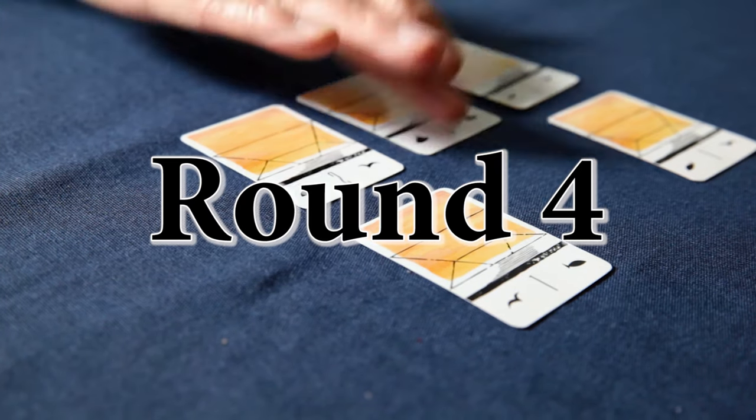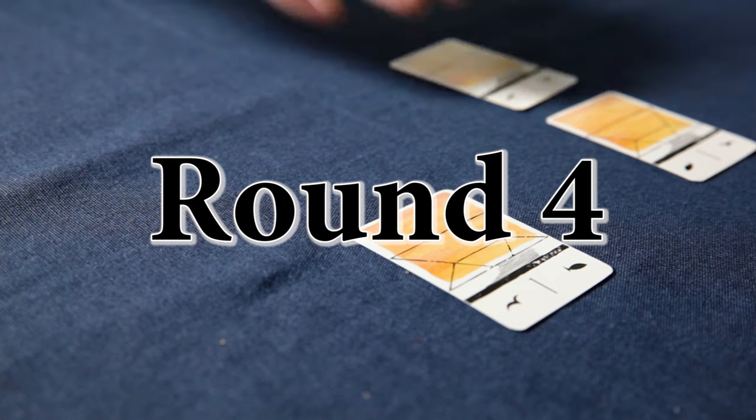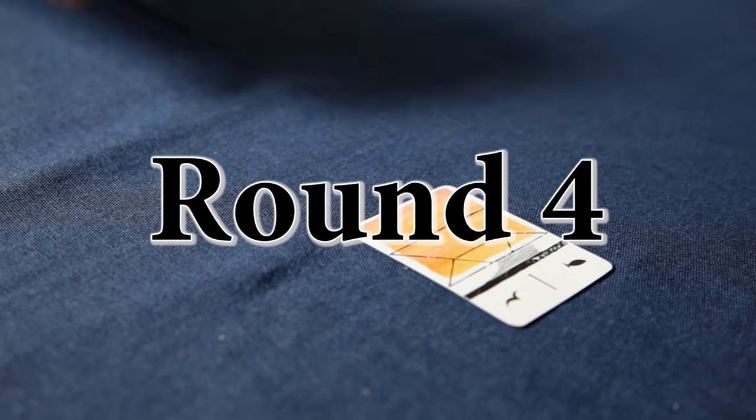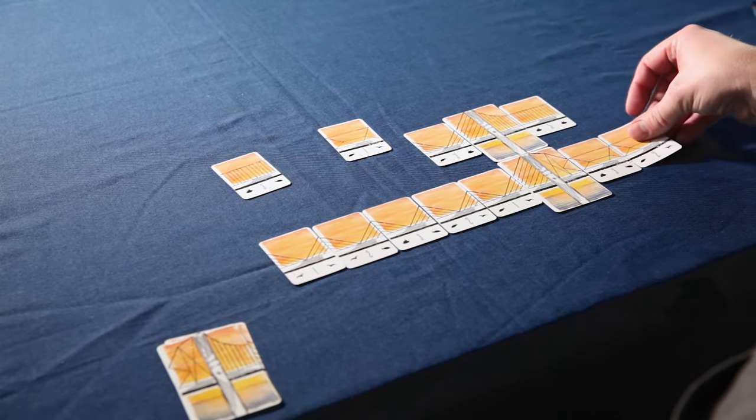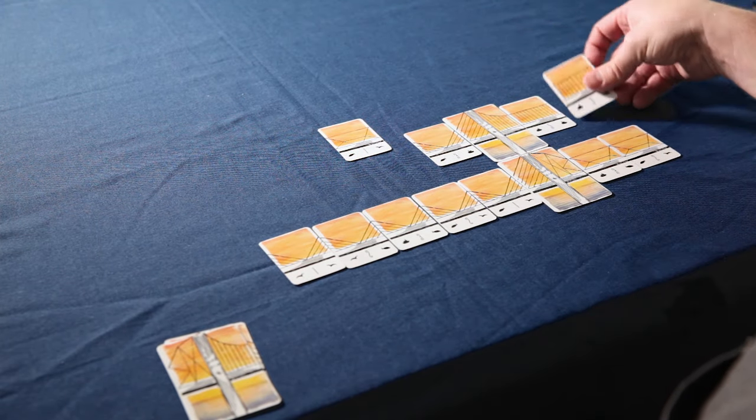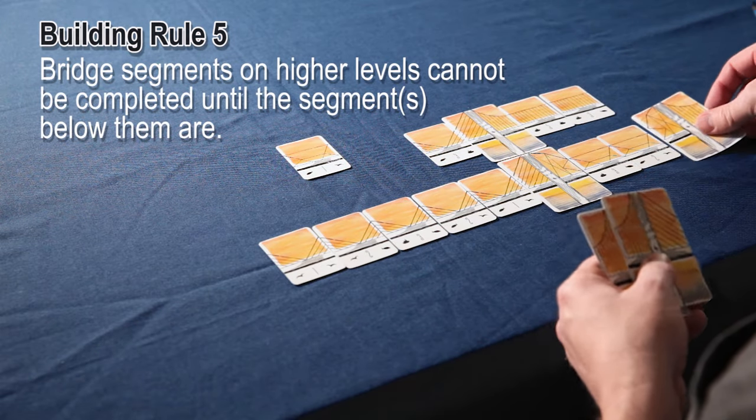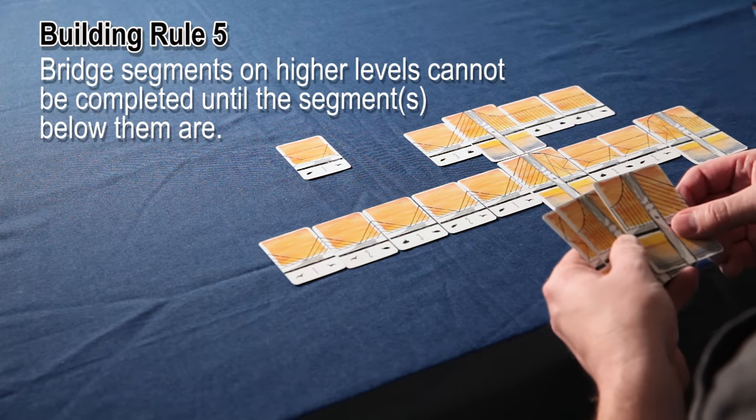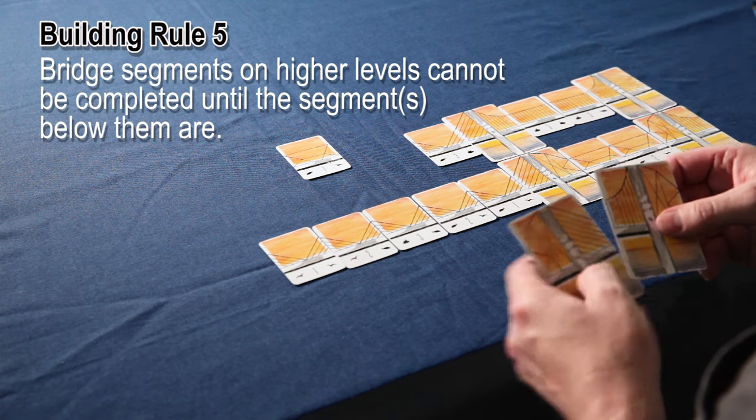It's round four and we draft and build one final time. During this building phase, you must complete all bridge segments or they can't be scored. A bridge segment is completed when it has matching pillar cards on both sides of it. When completing bridge segments on higher levels, you have to complete the level below it first or the ones above it are lost. This means that bridge segments on higher levels must be the same length as the levels below them.